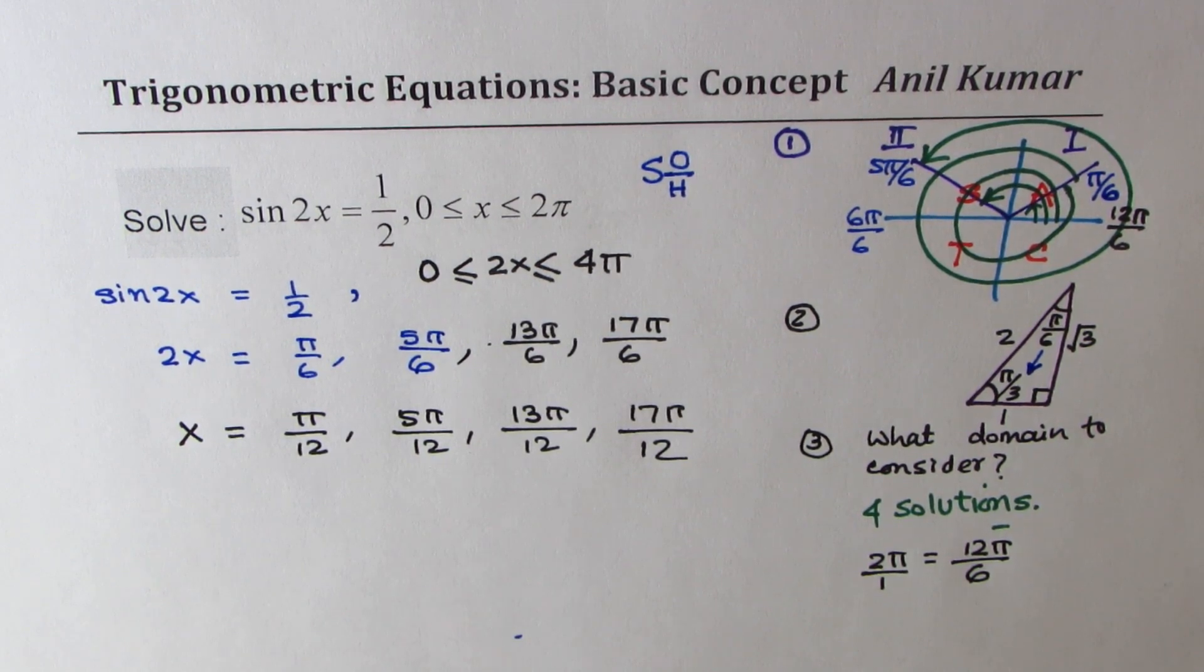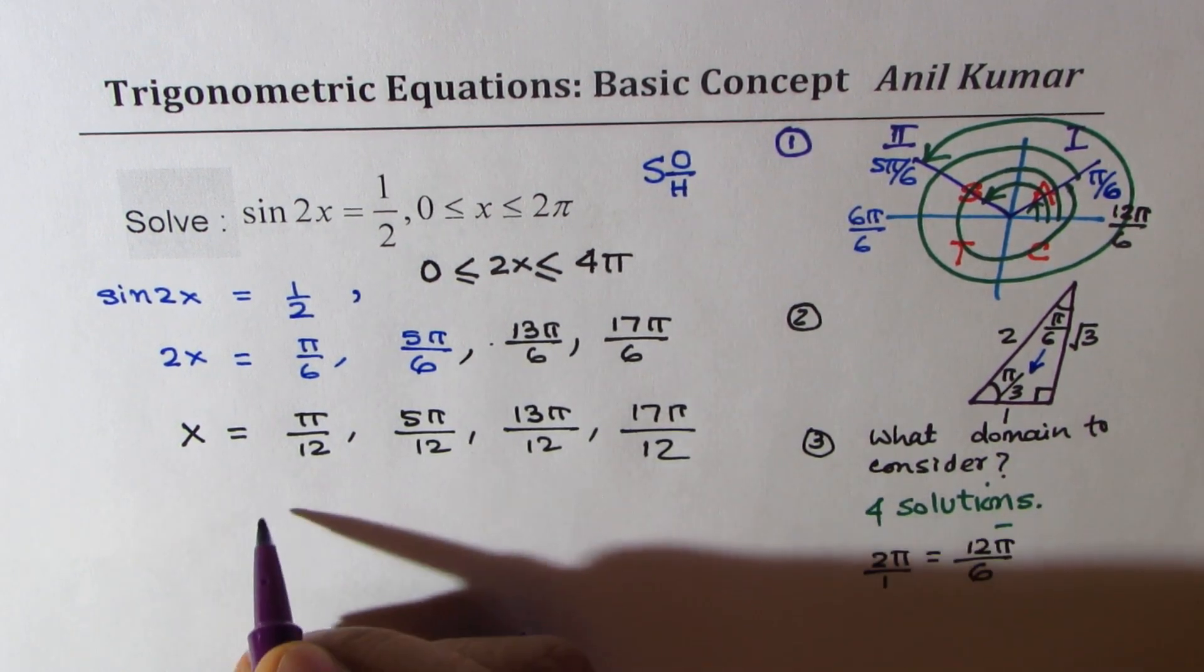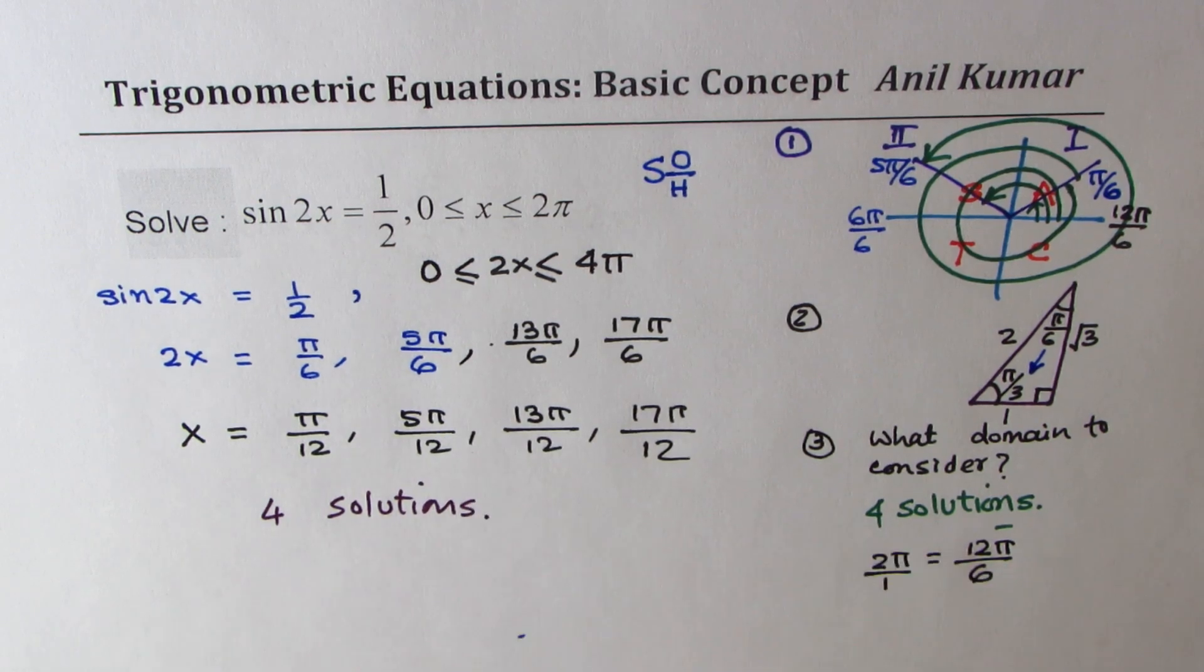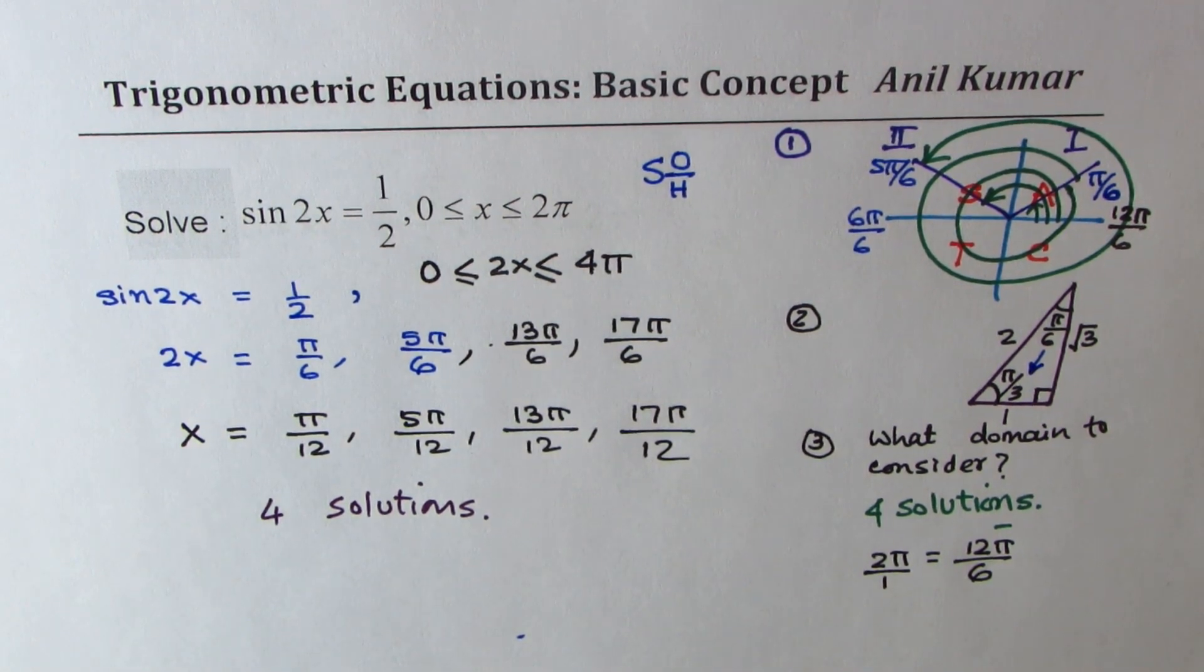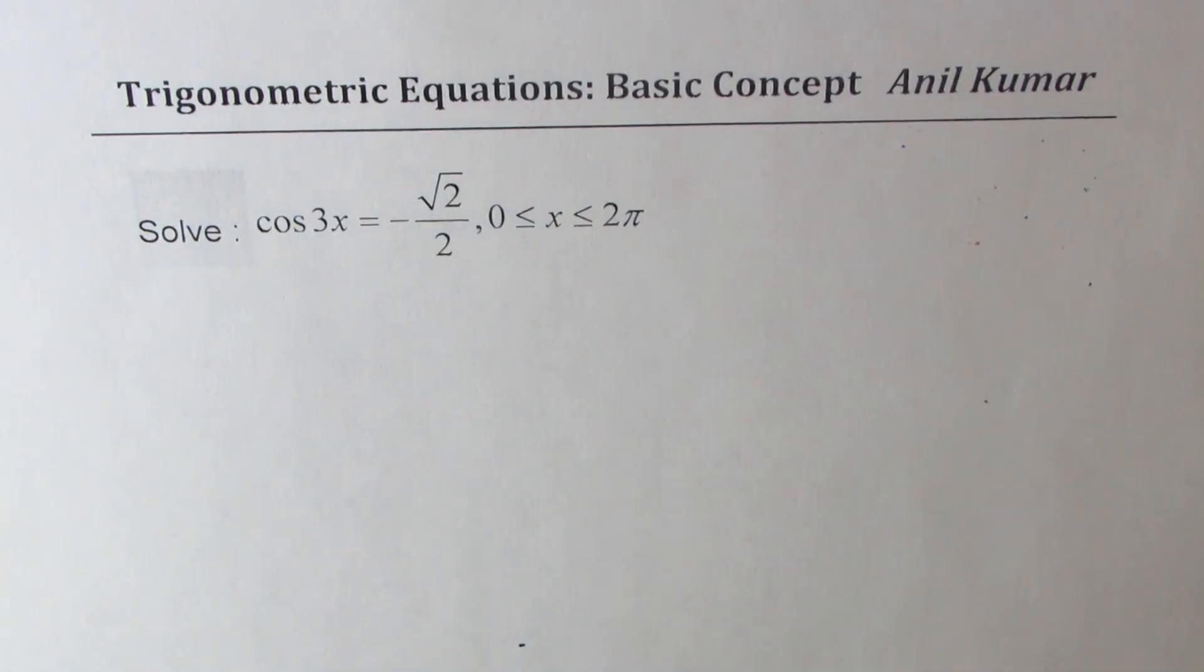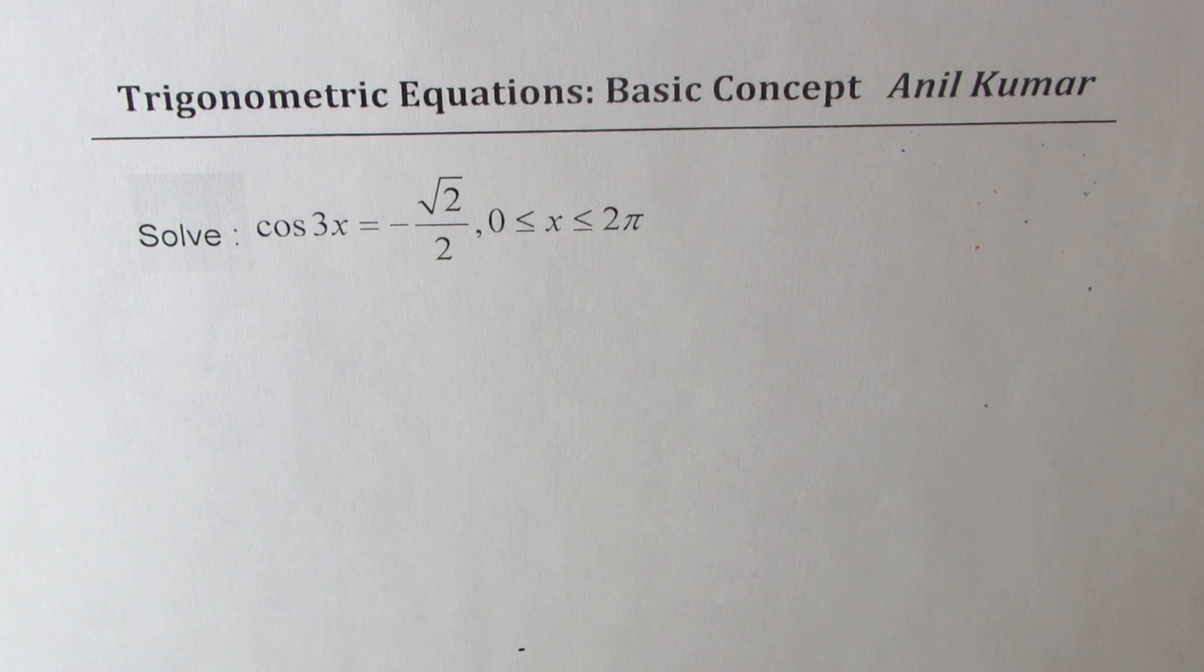I hope that concept is clear. Now I'll change this question from sine to cosine, and let's see if you could do it. So let's move on and take our practice question. Here is a question for you to practice. You need to solve cos 3x equals to minus square root 2 over 2, where again x is between 0 to 2 pi. So how are you going to solve?